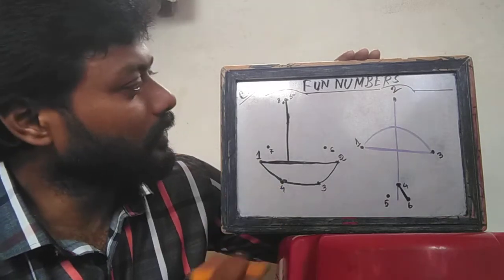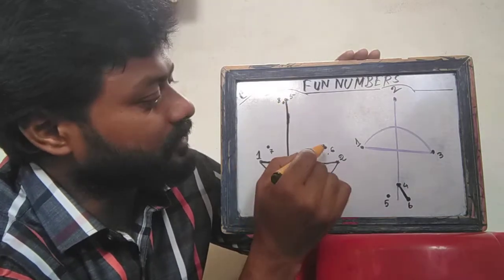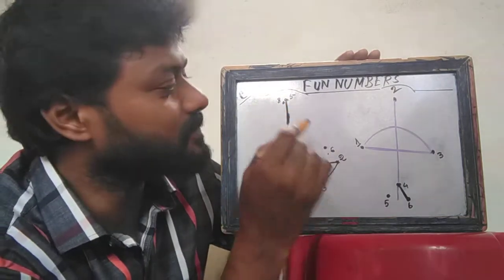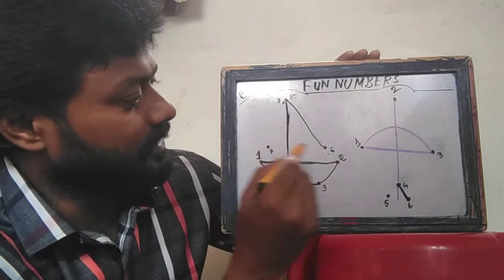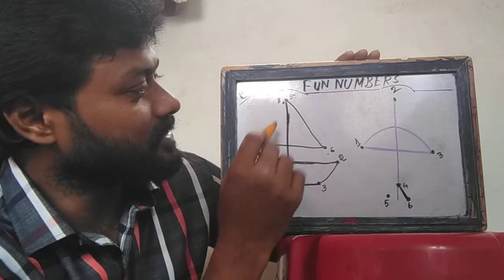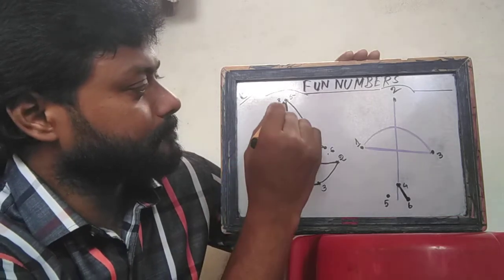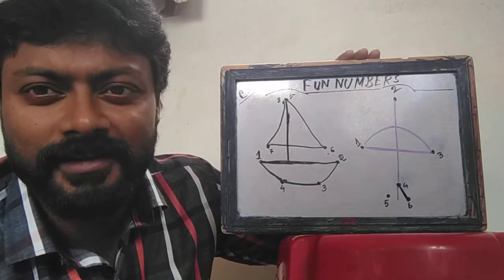And after 4, the 5 is here and the 6 is here. So we are going to draw a line from 5 to 6. Now 6 to 7, and from 7 to 8. See? We got a boat.